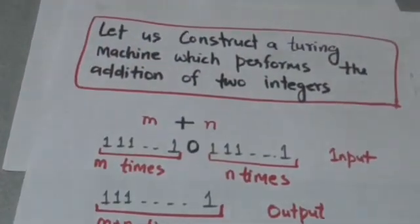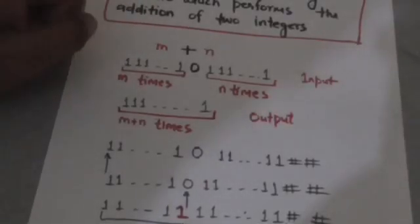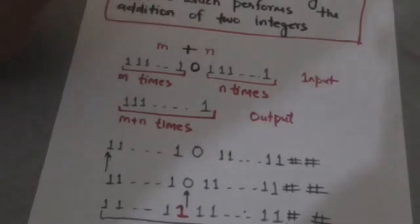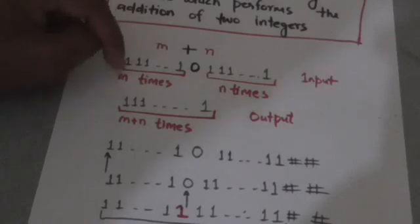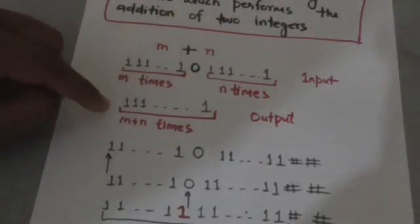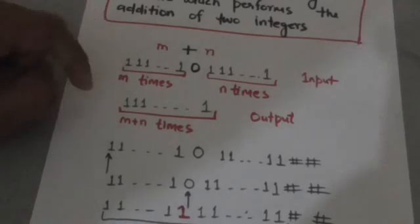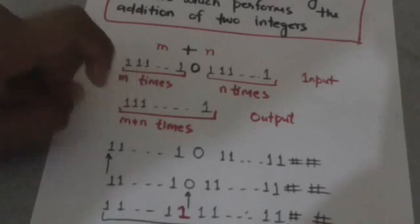Now let us construct a Turing machine which performs the addition of two integers. If we want to add two integers m and n, then the initial input on the tape should be strings of m ones and n ones separated by a zero. The content of the tape when the Turing machine halts should be a string of m plus n ones.